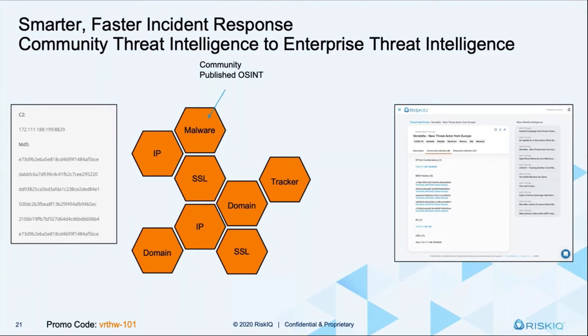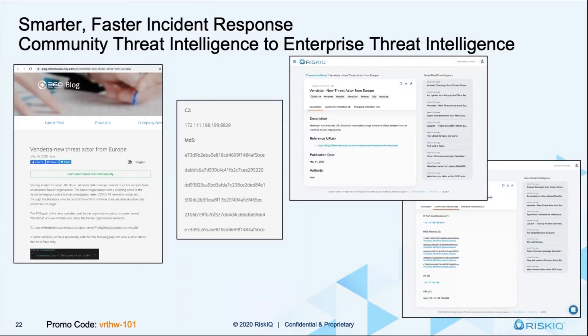When you think about it: we have about 90,000 community users. When we talk to them to find out how they're really using Passive Total, what we found is they start off with an article — some open source piece of threat intel — and the first thing they do is put it into Passive Total to find out if it's related, if it's bigger than what was published, or if they have any connections to it.